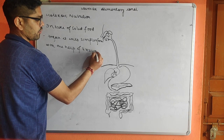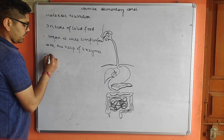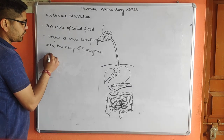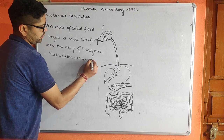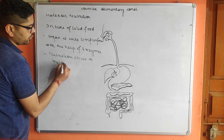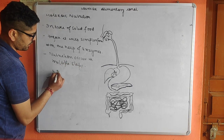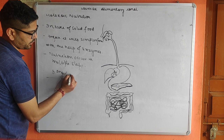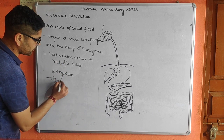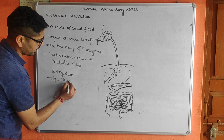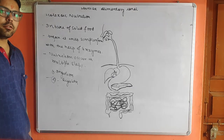This nutrition occurs in multiple steps. The first step is ingestion — ingestion means taking food inside the body through the mouth, so the mouth is the ingesting organ. The second step is digestion — digestion means the breakdown of complex food into simpler forms.